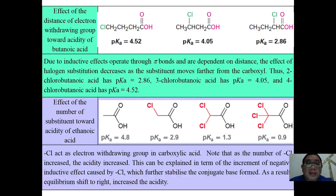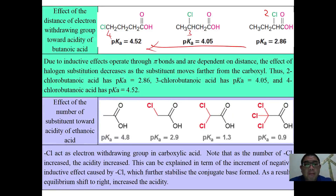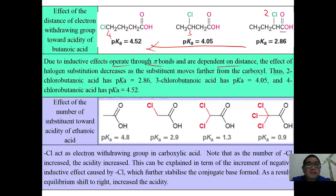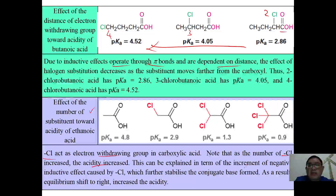The distance of an electron-withdrawing group from the COOH affects acidity. Comparing chlorobutanoic acid at positions 2, 3, and 4, the pKa increases as the position moves further away. This is because the inductive effect operates through sigma bonds and is distance-dependent: the closer the substituent is to COOH, the stronger the acid. Additionally, as the number of Cl substituents increases on ethanoic acid, acidity also increases, due to the cumulative negative inductive effect stabilizing the conjugate base, shifting equilibrium to the right.